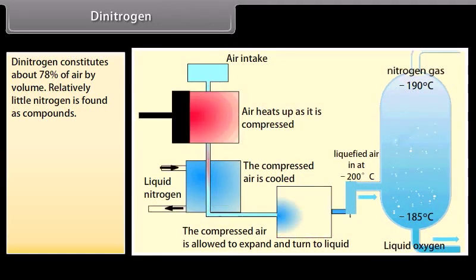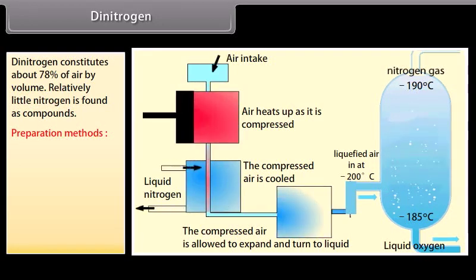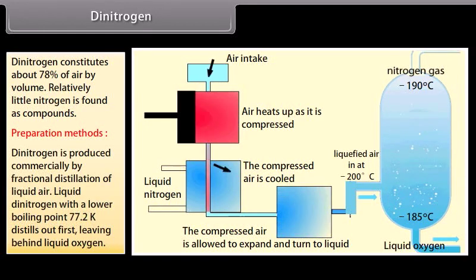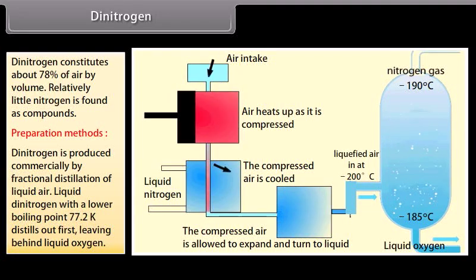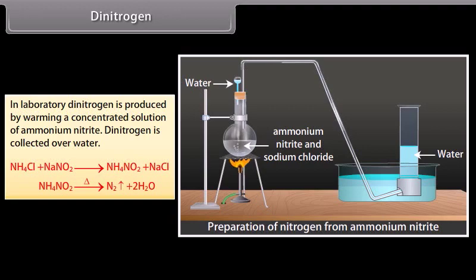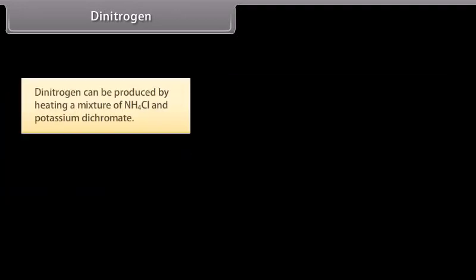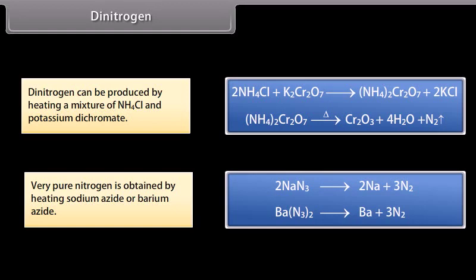Dinitrogen constitutes about 78% of air by volume; relatively little nitrogen is found as compounds. Dinitrogen is produced commercially by fractional distillation of liquid air — liquid dinitrogen with a lower boiling point of 77.2 K distils out first, leaving behind liquid oxygen. In the laboratory, dinitrogen is produced by warming a concentrated solution of ammonium nitrite, or by heating a mixture of NH4Cl and potassium dichromate. Very pure nitrogen is obtained by heating sodium azide or barium azide.